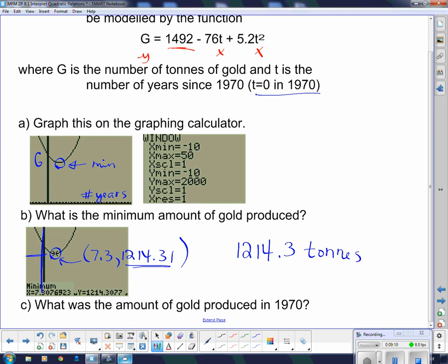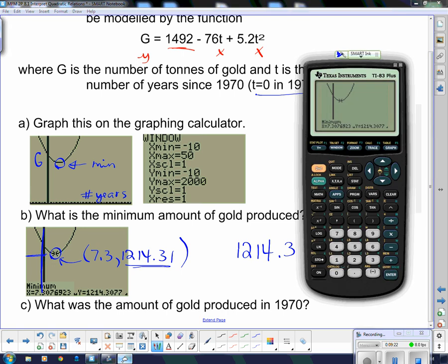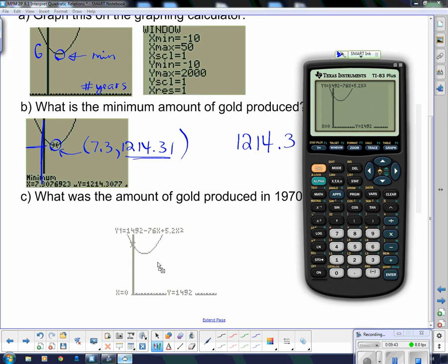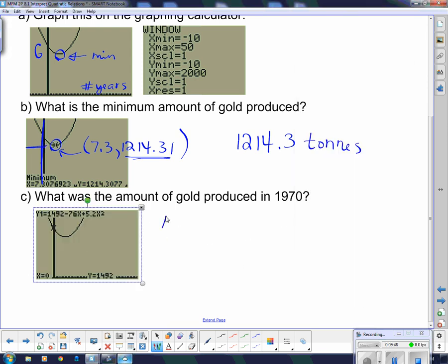And it says, what was the amount of gold produced in 1970? 1970 is the first year of production. So let's take a look at it here. That's when t equals 0 in 1970. So how I do that is I press trace. And since I want t equal to 0, I'm just going to press a 0. Notice it says x equals 0 on the bottom, so I press enter and it's going to jump right to it. It's at 1492. And at year 0, 1492 tons was produced.